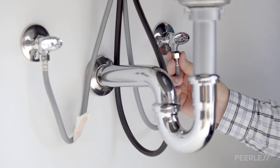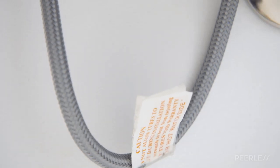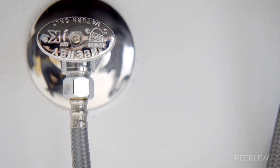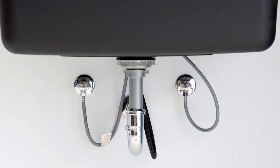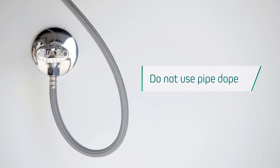Repeat for the other hose connection. Make sure that the hose with the hot label is connected to the hot supply valve, and the other hose is connected to the cold supply valve. Do not use pipe dope or other sealants on water connections.